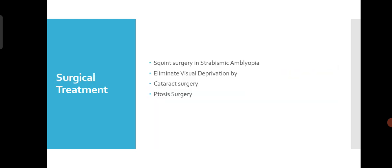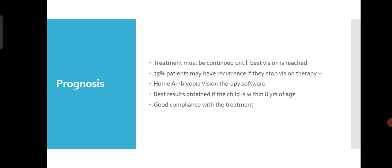If the child has squint, strabismus surgery is needed. If there is congenital cataract or ptosis, surgical intervention is required. Treatment must be continued until base vision is reached, because 25% of patients can have recurrence after one year if they stop vision therapy. Best results are obtained around 5 to 8 years of age, so Amblyopia must be treated at this age to stop recurrence.